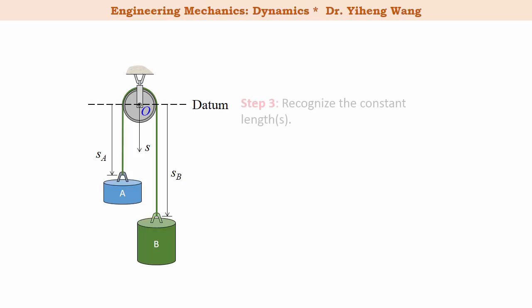Step 3. Recognize the constant length in the system. For example, for this piece of rope that wraps around the top semicircle of the pulley, although it also moves, the length is always a constant. Let's call it L-semi for now.